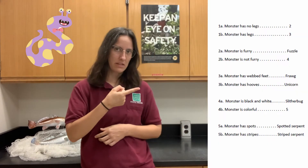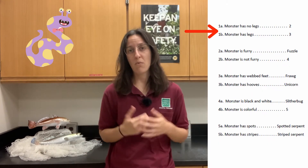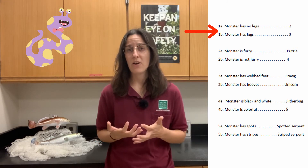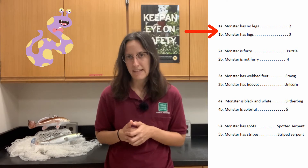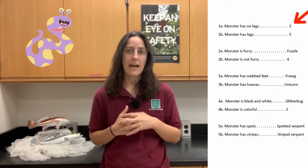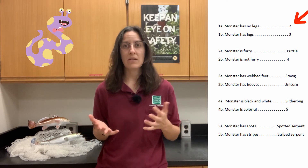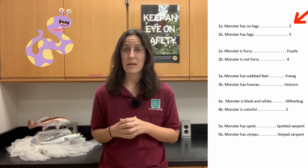So now let's practice using a dichotomous key with this monster here using this key over here. Remember, we always want to start with step one. Step one for this key is asking us to identify whether or not this monster has legs. I don't see any legs, so let's look on the right side of our key, and that'll be where the key is going to give us more directions.